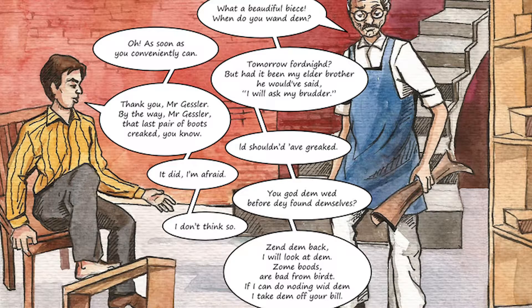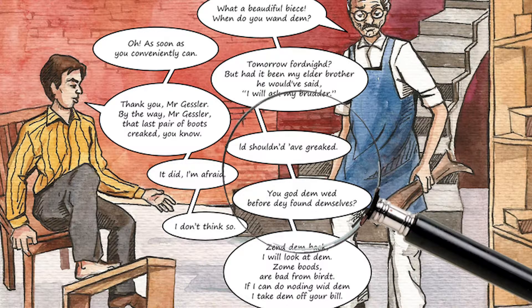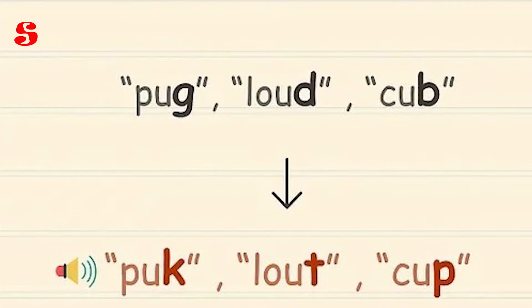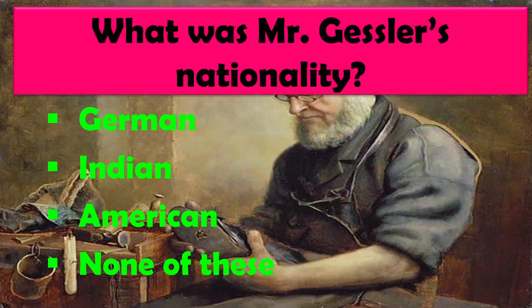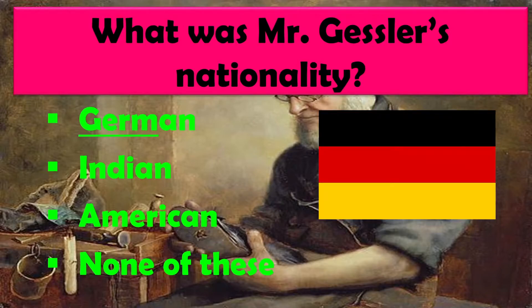In the lesson, Mr. Gessler ke shabdon mein, kuch words mein D and T ko interchange kiya gaya hai, jisse dikhaya gaya hai ke Mr. Gessler German tone mein bolte the — unka accent German tha. What was Mr. Gessler's nationality? Jab unka tone German tha, to right answer is German.